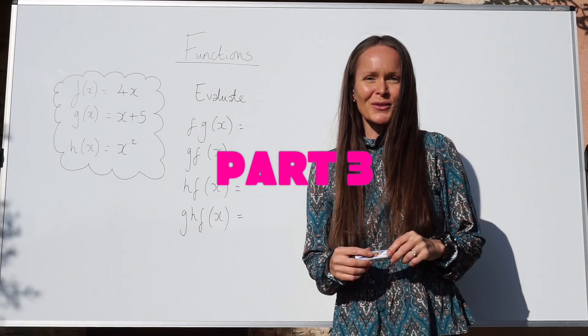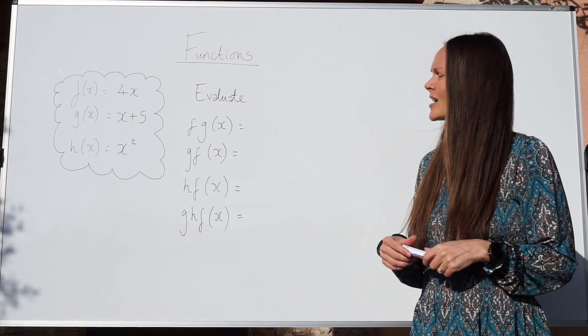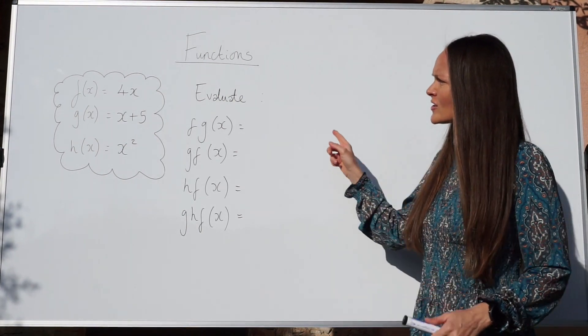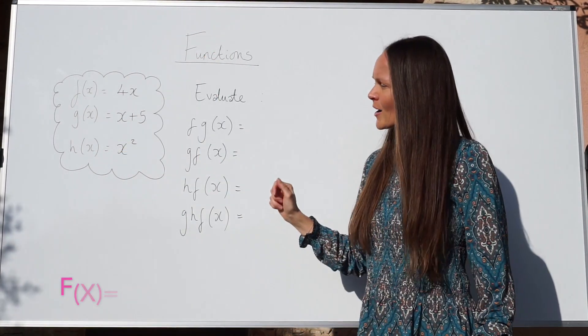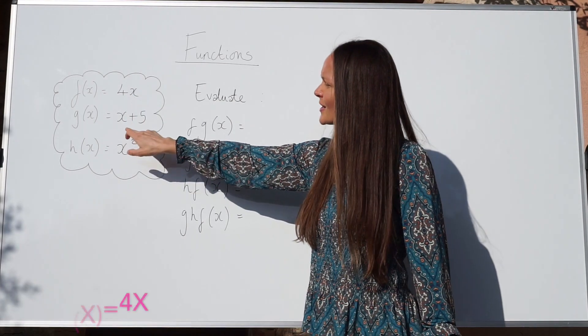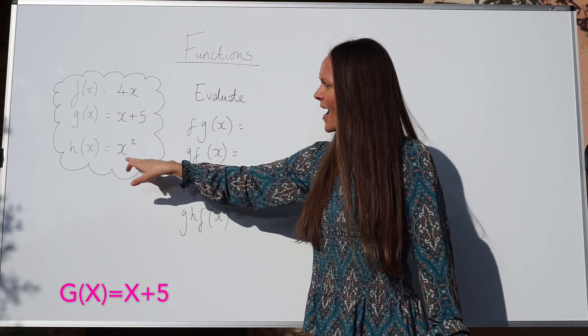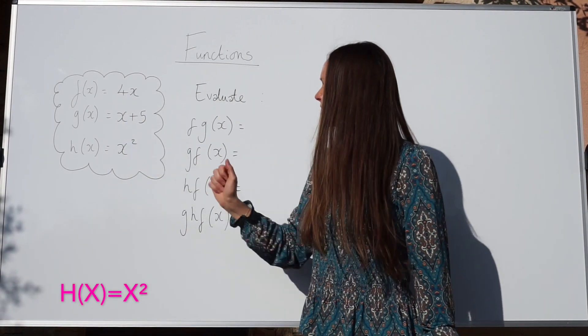Next I'm going to show you something called composite functions. Watch out with these questions — I've changed the functions. Now f of x is equal to 4x, g of x is equal to x plus 5, and h of x is equal to x squared.